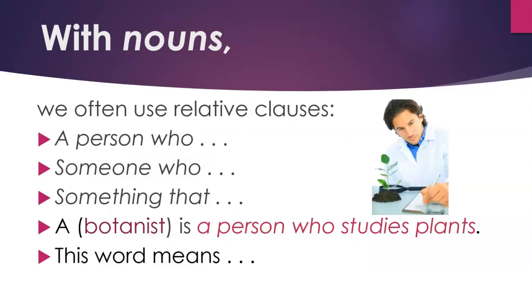With nouns, we often use relative clauses. For example: a person who, someone who, or something that. For example, a botanist is a person who studies plants.